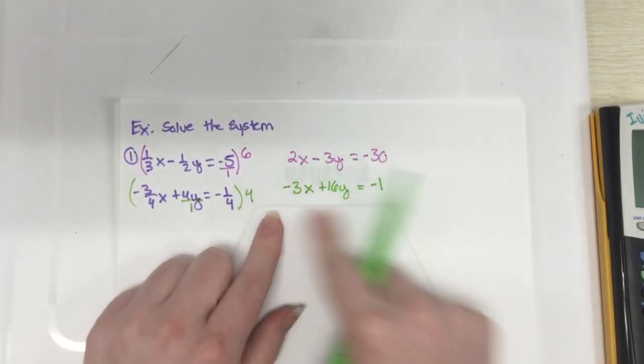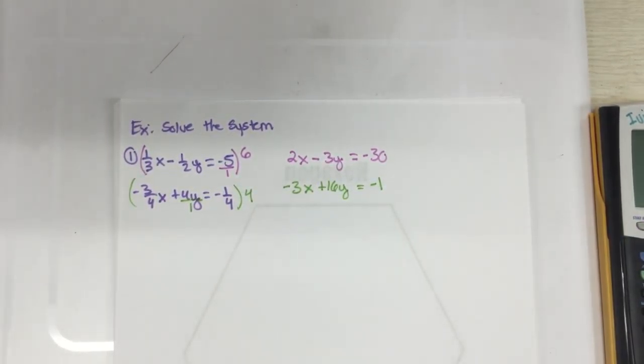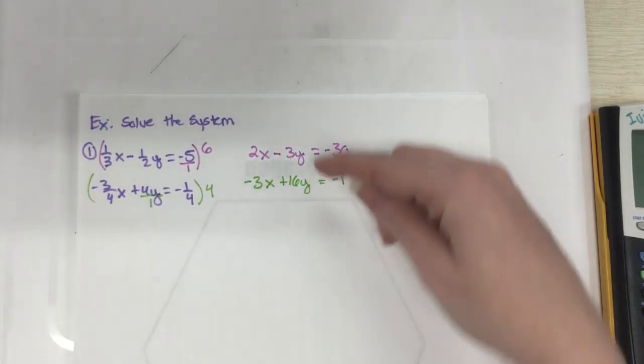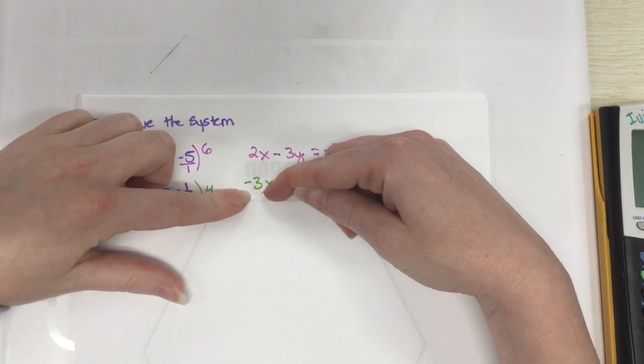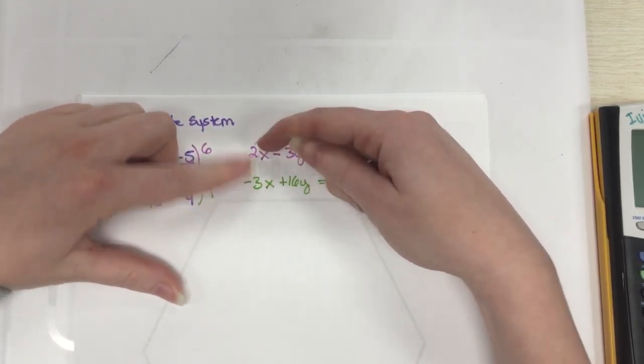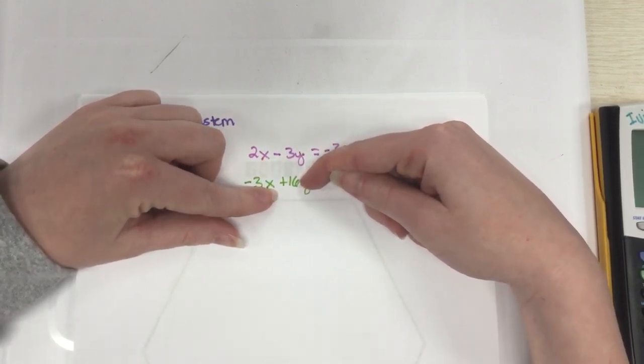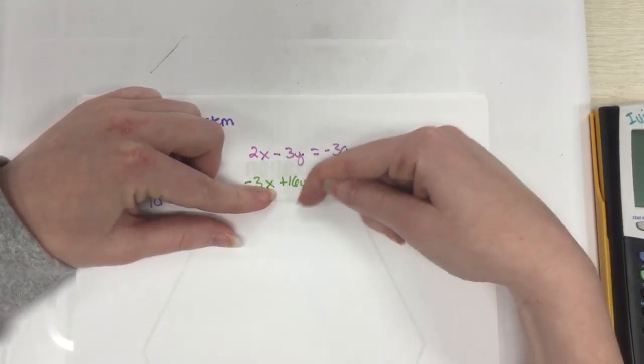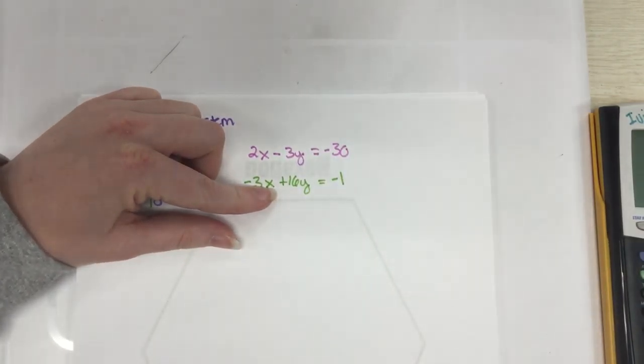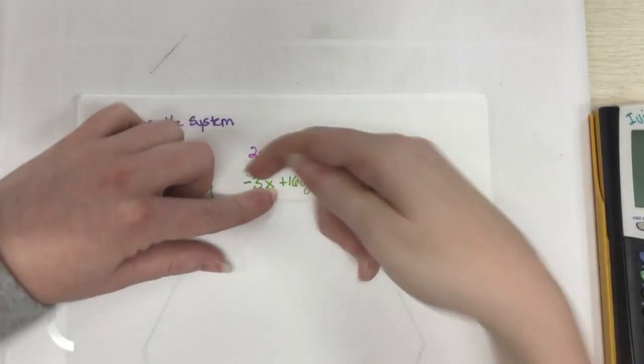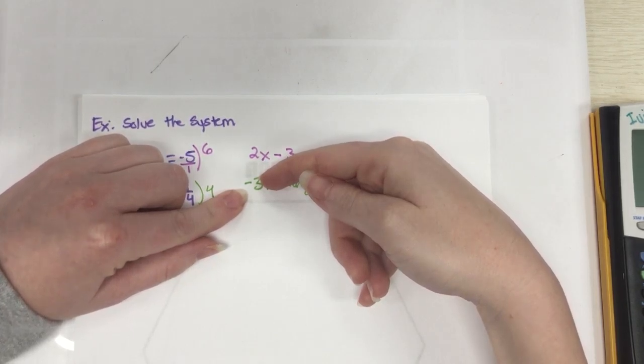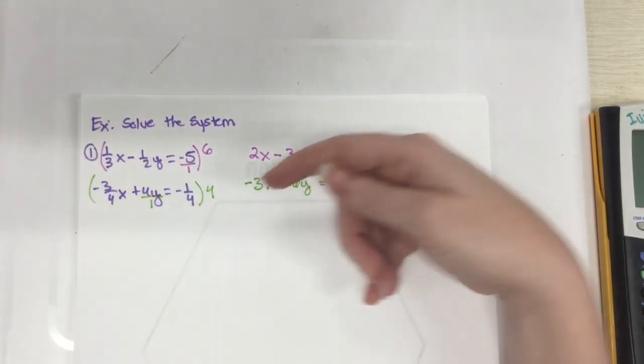And so we're going to do the same thing here. So just think what would be the common denominator between all those terms. And as I look, well, I have 4, 1, and 4, so that's an easy one. It's just going to be 4. And so 3 fourths times 4 is just, and there's a negative, is just negative 3x. 4 times 4 is plus 16y. And negative 1 fourth times 4 is just a negative 1. All right, so now I have a new set. It's all whole numbers. So I'm going to go ahead and start the process of elimination, because I like whole numbers, and that's easy to deal with.